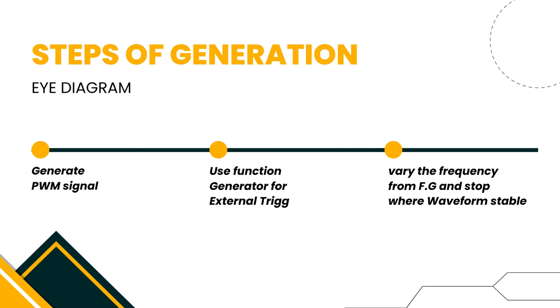Now coming to the practical implementation using the oscilloscope, function generator, and PWM signal. In the first step, we create the waveform of a PWM signal using the PWM generator, as we can see in the figure, and we will observe its waveform on the oscilloscope.